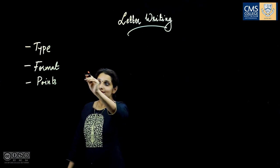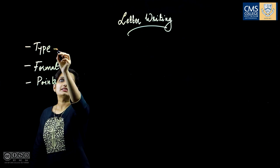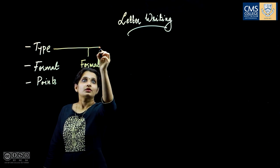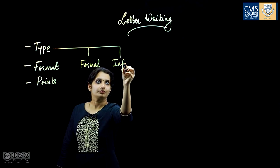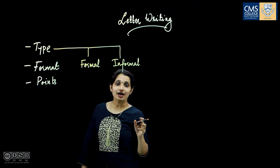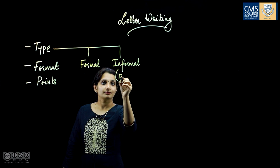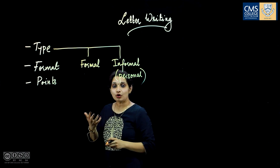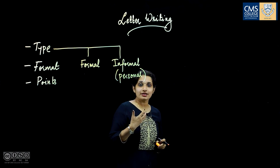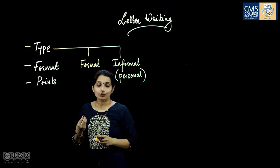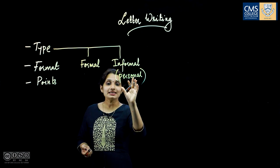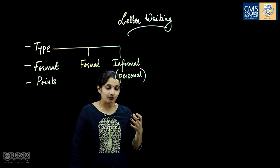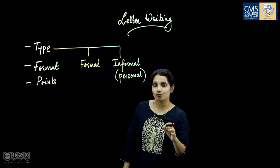Letters basically fall under two categories: formal letters and informal letters. The informal letters are also known as personal letters. These are letters that we write to our friends, to our parents, to our dear ones — basically to anyone with whom we share a personal relationship. Due to the personal nature of these letters, they are more relaxed and we generally use a very casual or an emotional tone while writing them.